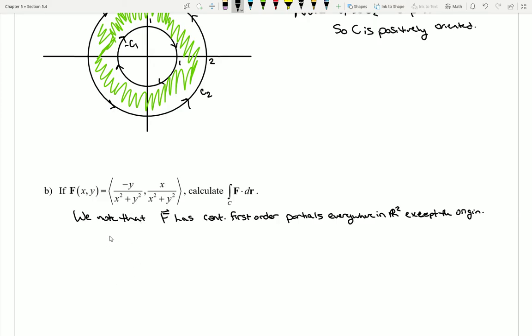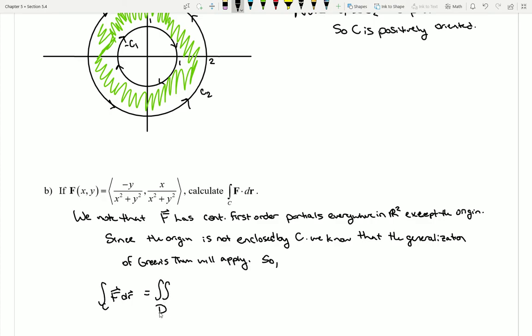However, I can see here that since the origin is not enclosed by C—notice C only enclosed the green space—since this is not enclosed by C, we know that the generalization of Green's theorem will apply. So my integral F dot dr across C...